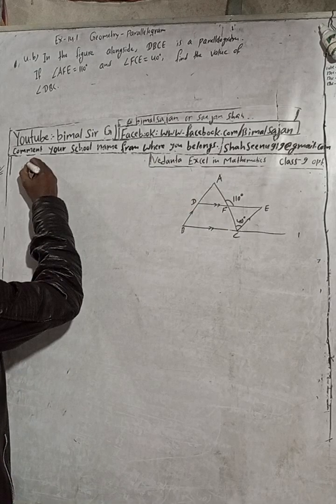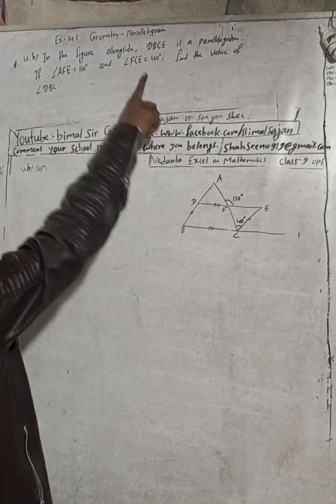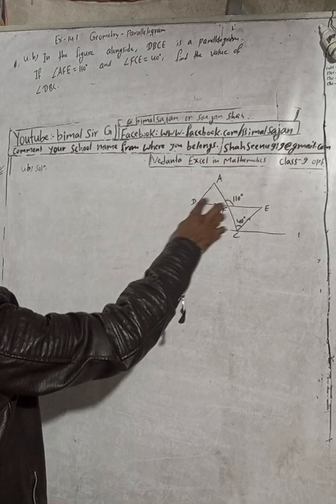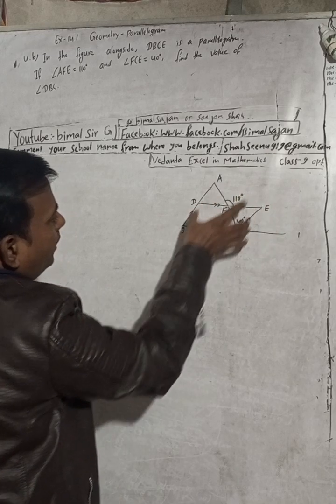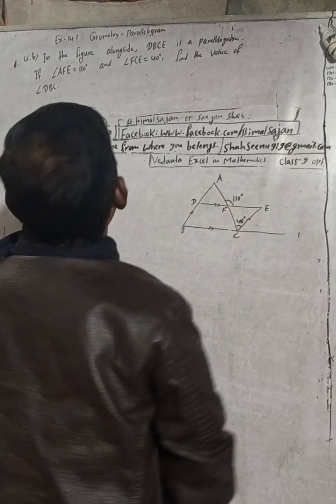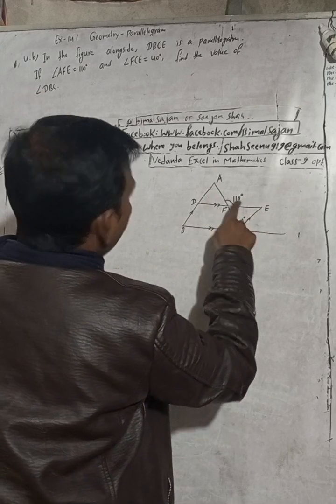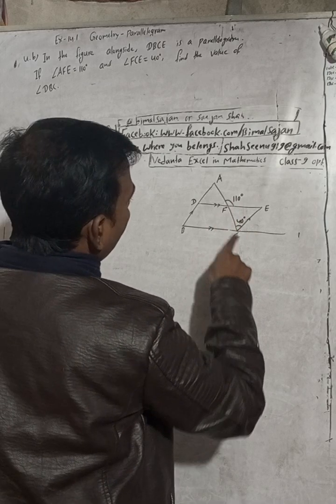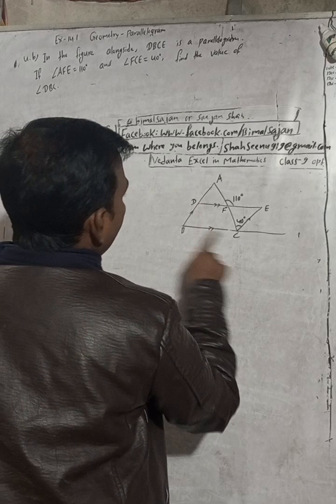This is 4B solution. In the figure alongside, DBC is a parallelogram. This is parallel, and this is parallel to this. If angle A is 10 degrees and FC is 40 degrees, find the value of angle DBC.